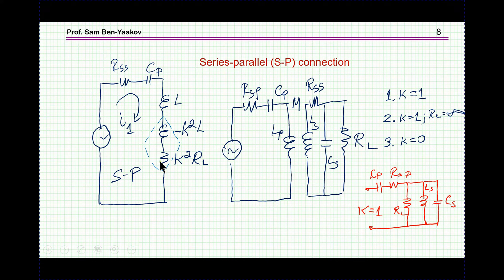So, if K equal to 0, this is 0, this is 0, these are in resonance, so, we end up with this RSP, we end up with this one only. So, we see that this makes sense, makes sense, although it looks very strange, but it makes sense.